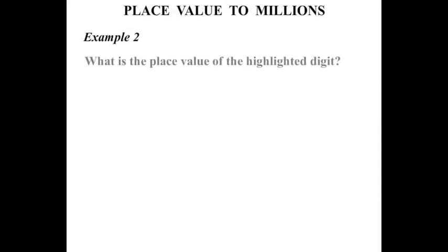Example 2, what is the place value of the highlighted digit? The first number we've got 8,749,536. The 7 is highlighted. What is the 7 worth? We'll start again from the right: ones, tens, hundreds, thousands, ten-thousands, hundred-thousands. We've got 7 lots of 100,000. That is 700,000.